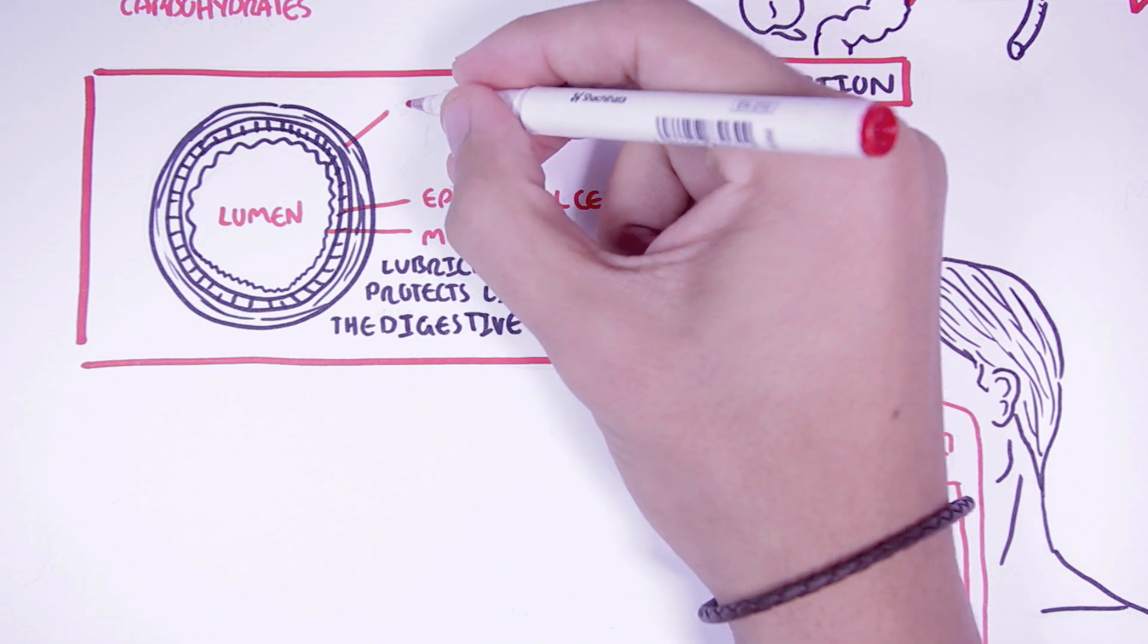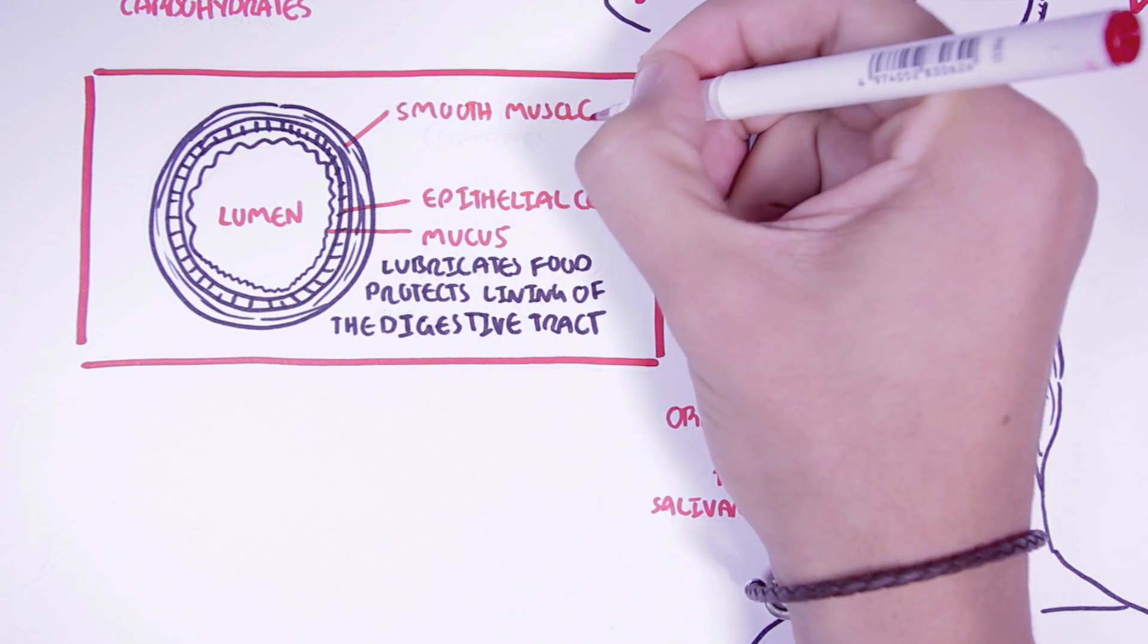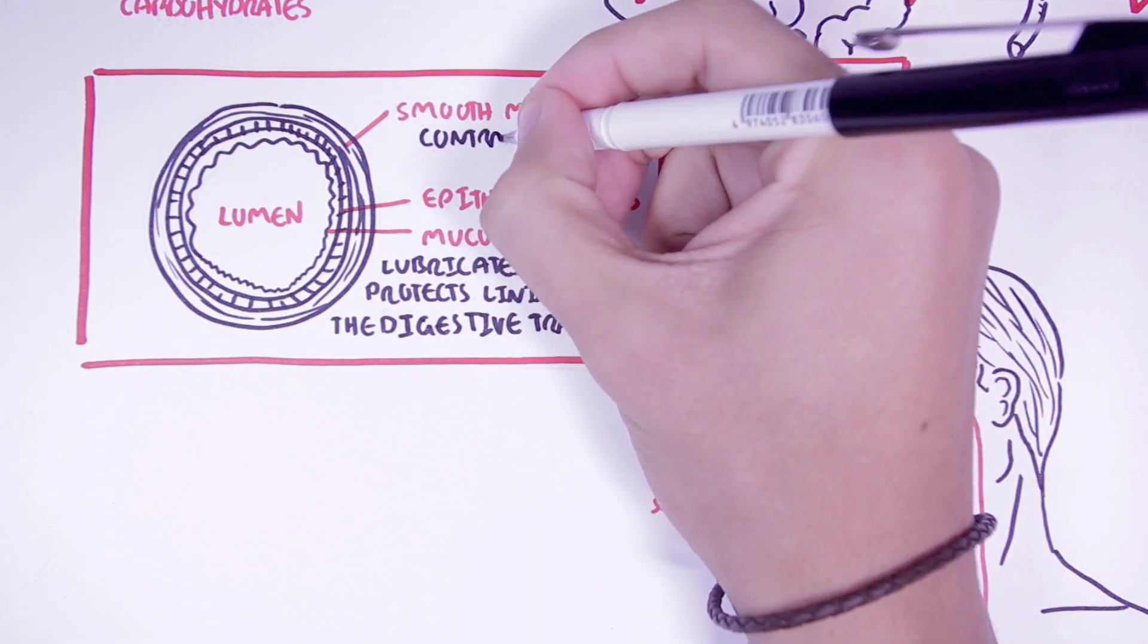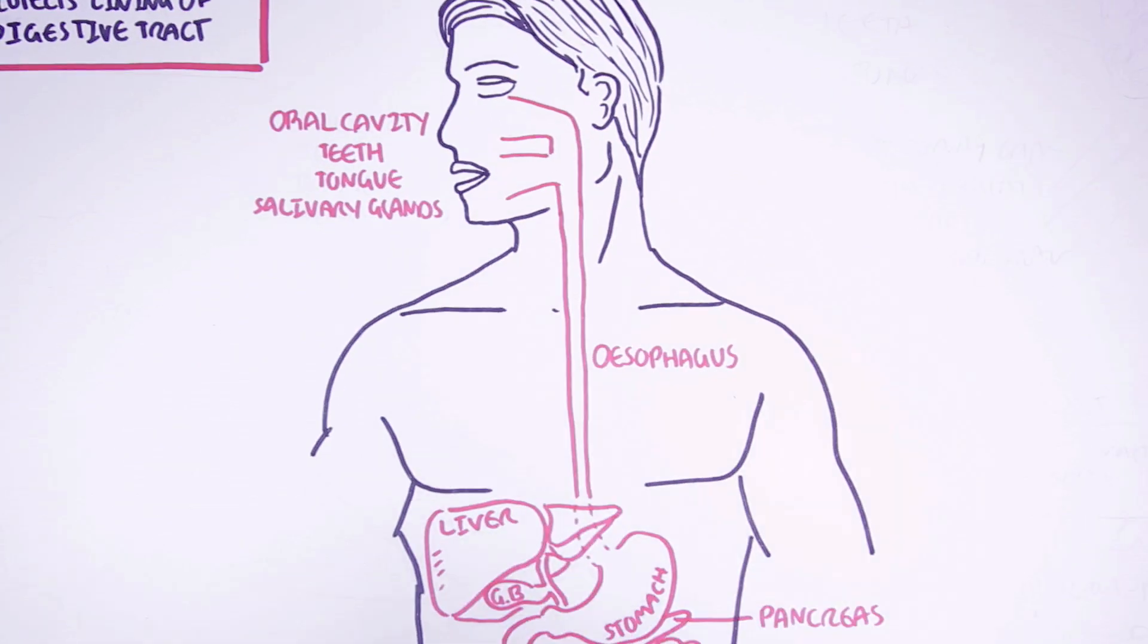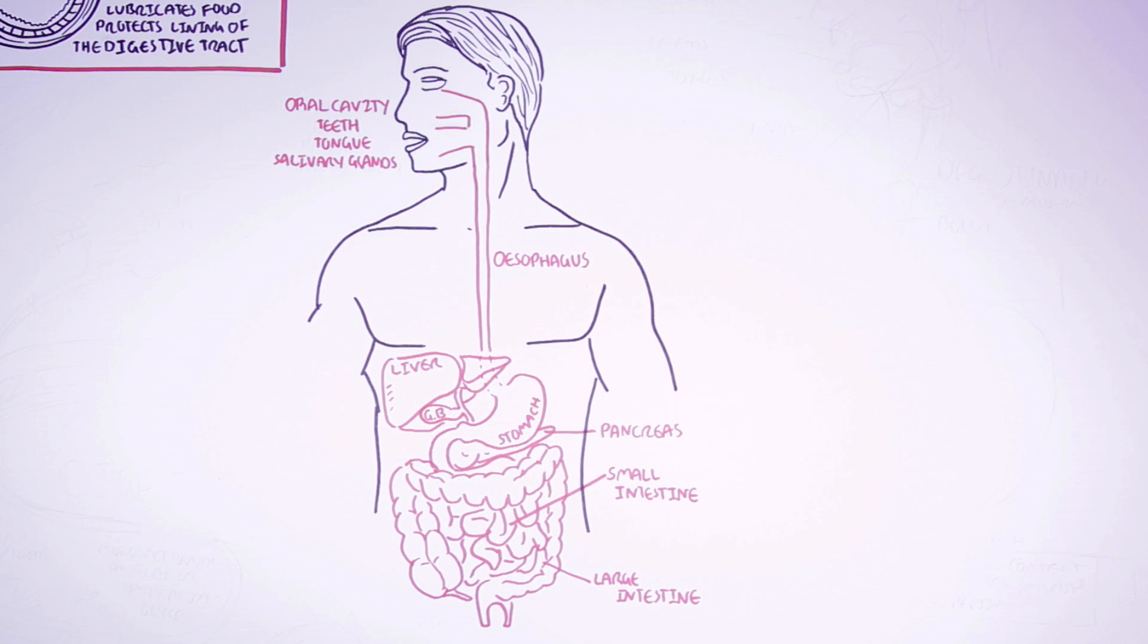The third layer is the smooth muscle layer, the outer layer, which is important in contraction. Through contraction, the smooth muscle allows the food to move through the digestive tract after being ingested.